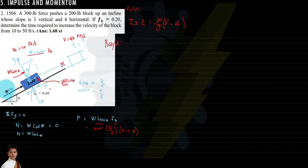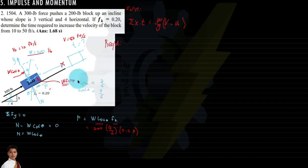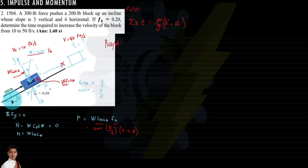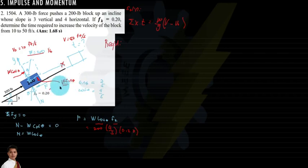The positive force is the 300 pounds applied up the incline. Negative forces are the friction force and the component of weight along the x-axis, which is W sine theta. The friction force is normal force multiplied by the coefficient of friction. Since the slope is 3 vertical and 4 horizontal, the hypotenuse is 5, so sine theta equals 3/5 and cosine theta equals 4/5.